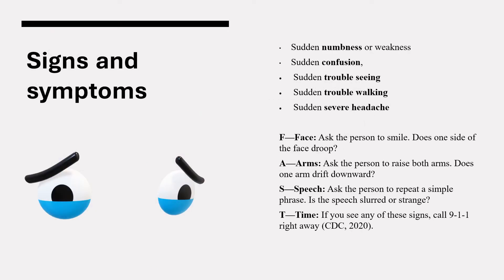These are some of the signs and symptoms to look for in a person who may have experienced a stroke: sudden numbness or weakness in the face, arm, or leg, especially on one side of the body; sudden confusion, such as trouble speaking or difficulty understanding speech; sudden trouble seeing in one or both eyes; sudden trouble walking, which may look like dizziness, loss of balance, or lack of coordination; and sudden severe headache with no known cause.